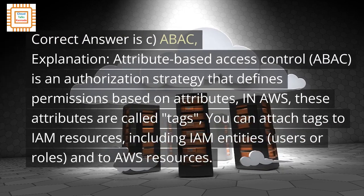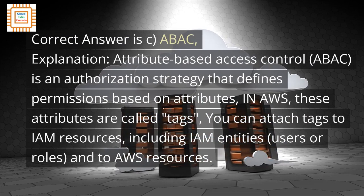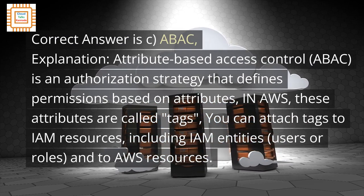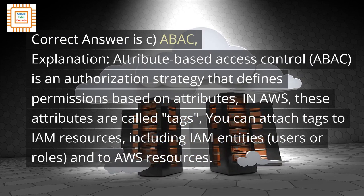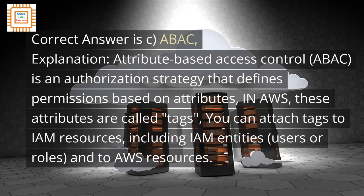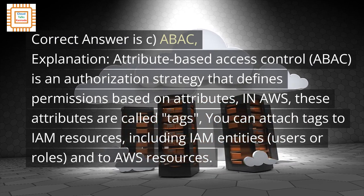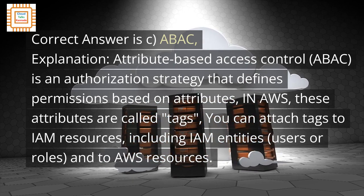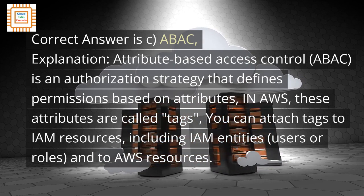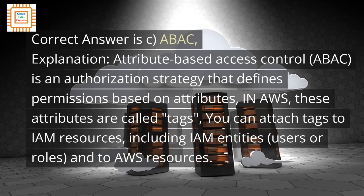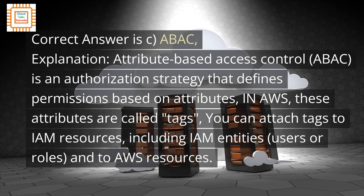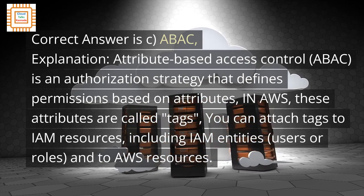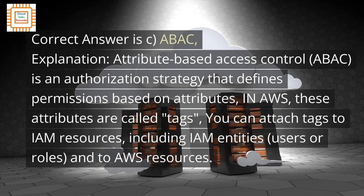The correct answer is C: ABAC. Attribute-based access control (ABAC) is an authorization strategy that defines permissions based on attributes. In AWS, these attributes are called tags. You can attach tags to IAM resources, including IAM entities such as users or roles, and to AWS resources.